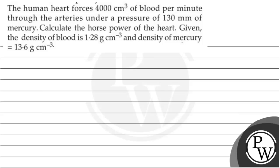The question states: a human heart forces 4000 centimeter cube of blood per minute through arteries under a pressure of 130 mm of mercury. Calculate the horsepower of the heart, given the density of blood is 1.28 gram per centimeter cube and the density of mercury is 13.6 into 10 raised to minus three.